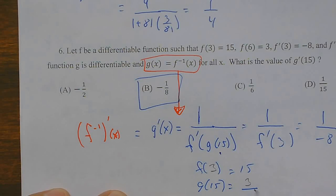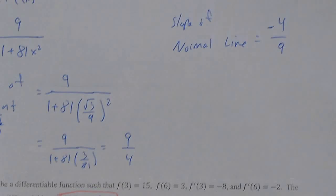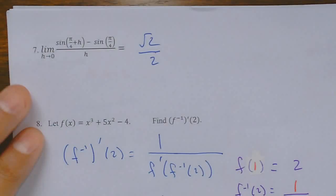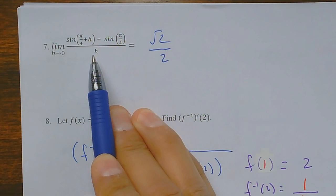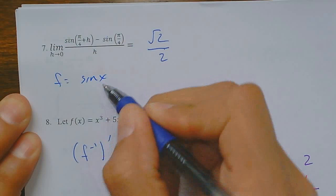Number seven is the definition of a derivative. You look at that and should recognize what function is being asked about — the function is sine of x. I'm asking for the derivative of that, then plug in pi over 4. The derivative is cosine; plugging in pi over 4 gives root 2 over 2.